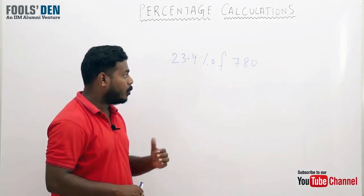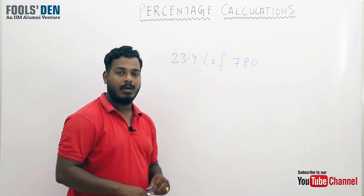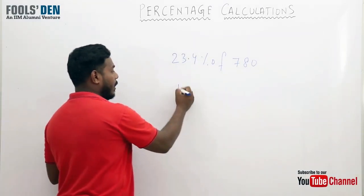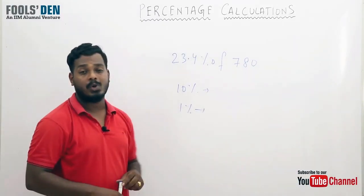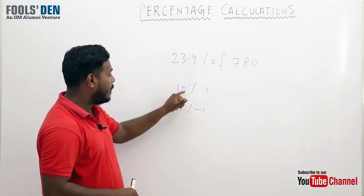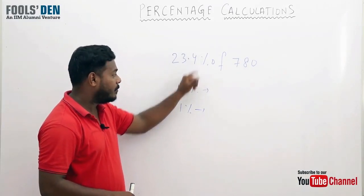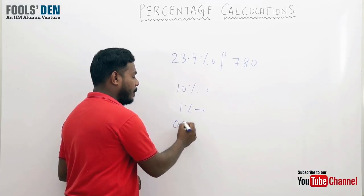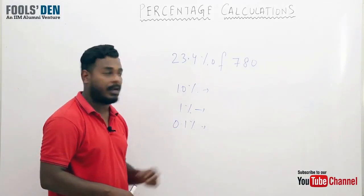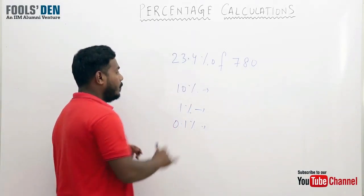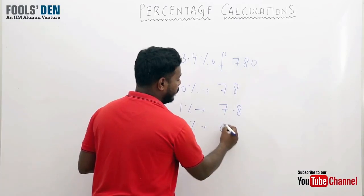Let's take one last example where we go more complicated. Say I need to calculate 23.4 percent of 780. I can calculate 10 percent and 1 percent of 780, but that will not solve the issue. Because with 10 and 1, I can reach 23, but how would you calculate this 0.4 percent? For this, the point is that only 10 and 1 won't work - you also need to calculate 0.1 percent. We need to go one step further with 10, 1, and 0.1 to make 0.4. Now 10 percent of this is 78, 1 percent would be 7.8, and 0.1 percent would be 0.78, which can be rounded off to 0.8.